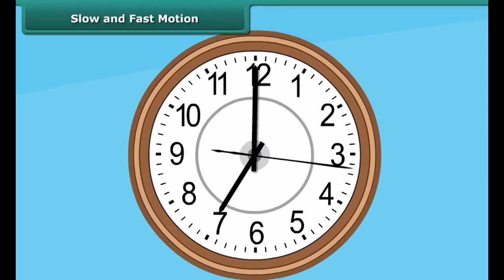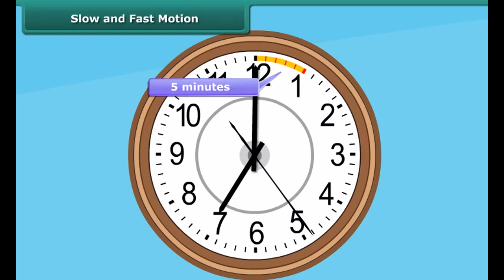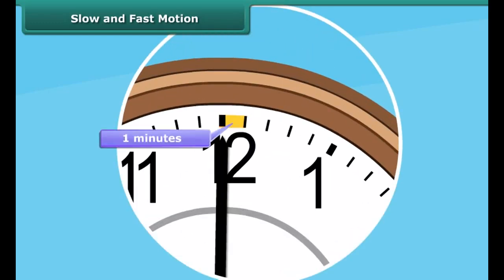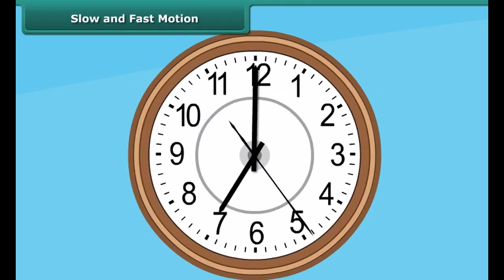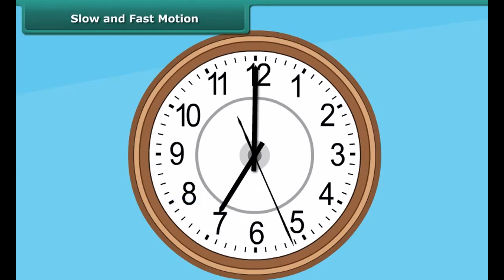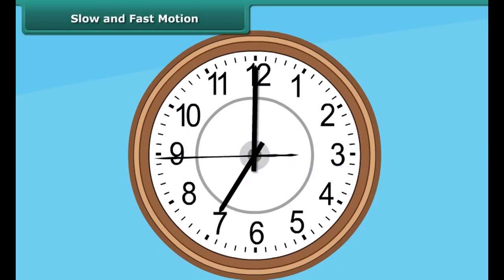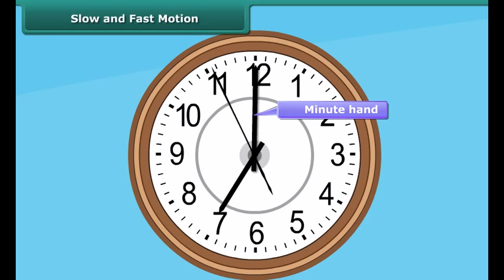Have you ever observed a wall clock? A simple wall clock or a wrist watch has a circular dial with three needles. The circular dial is divided into 12 equal parts, with each division representing five minutes. Observe the dial more closely and you will find that it has sixty smaller divisions — a single small division represents one minute. The longest needle, which moves the fastest, is known as the second hand — it completes one revolution in one minute. The smallest needle, which is also the slowest, is called the hour hand — it completes one revolution in 12 hours.